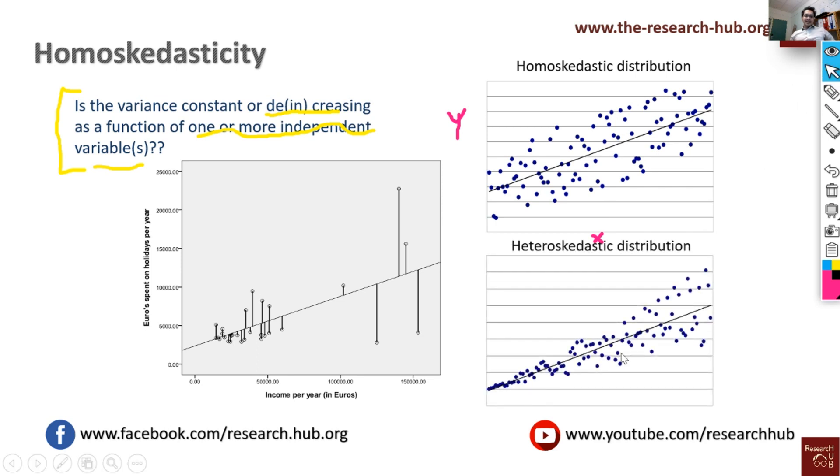But then in heteroscedasticity what happens is that if we plot the error terms on the Y axis again and we have some independent variables on the X axis, you will see that with increasing values of X the distances are increasing. The error terms are getting larger with increasing values of X, so this means that we have a heteroscedasticity problem in the data.